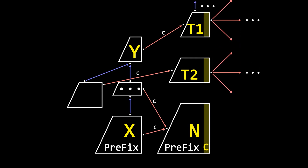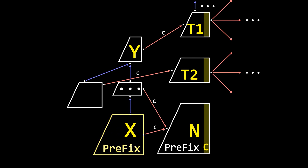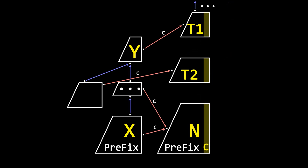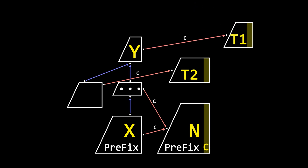We know that on the link tree, from X to Y's ancestor, the transitions of C all point at N. So N's shortest string's length is Y plus 1 plus 1, which equals Y plus 2, and T2's shortest string's length is also Y plus 2. Since T1's length is Y plus 1, both N and T2's link points to T1.